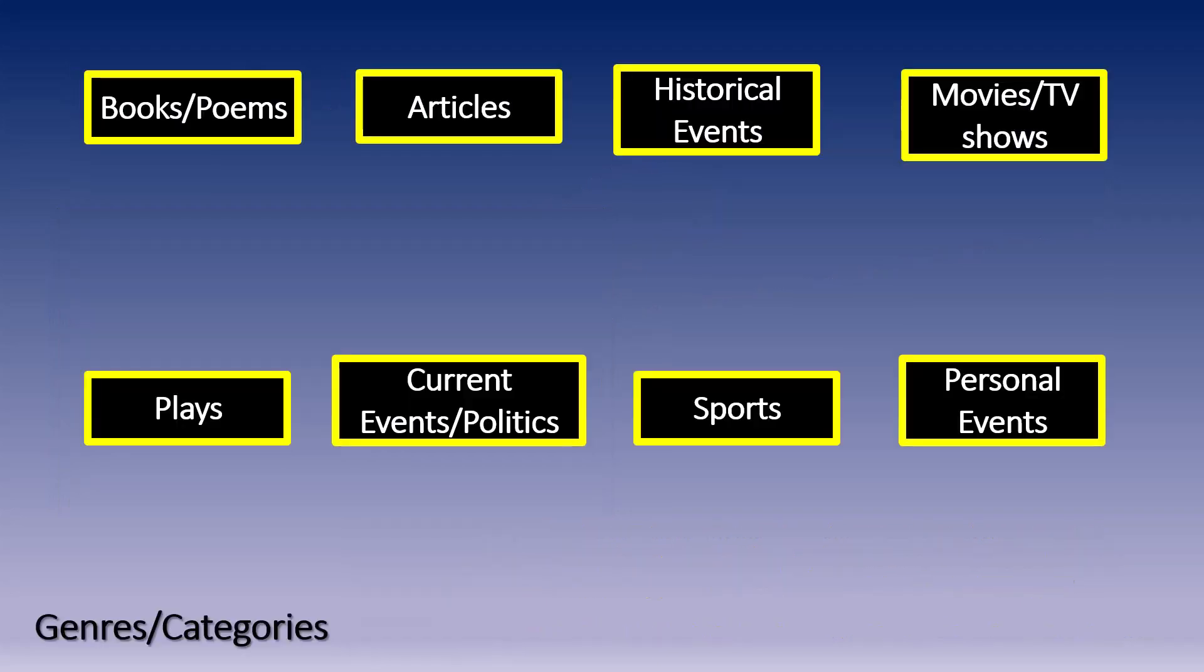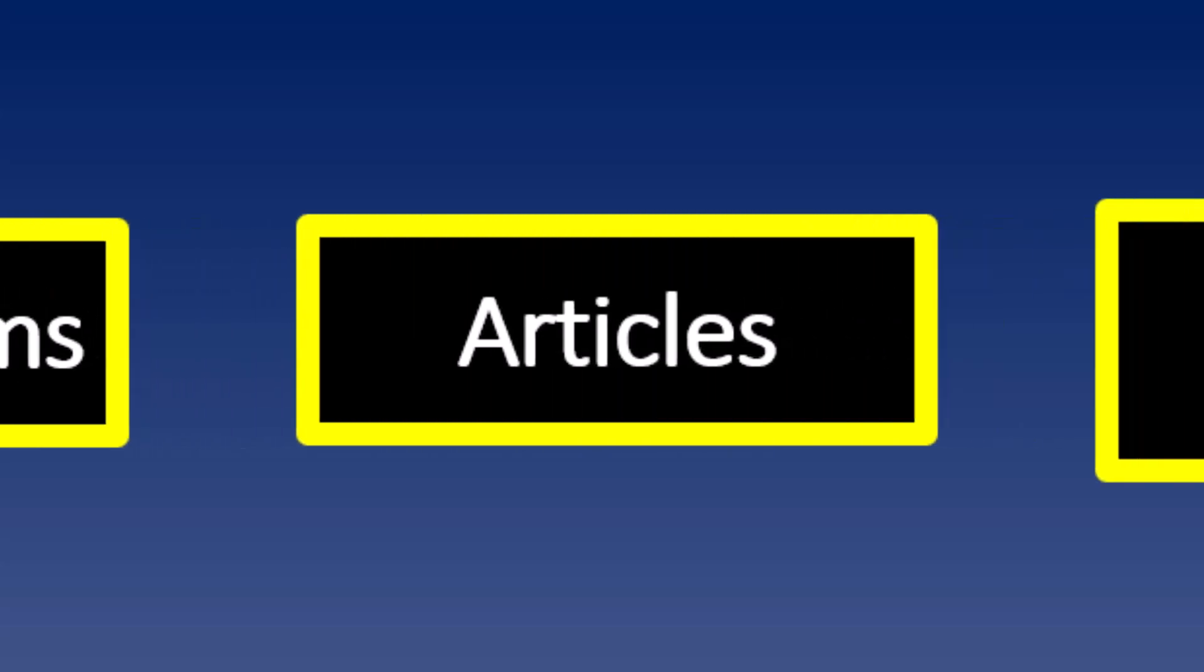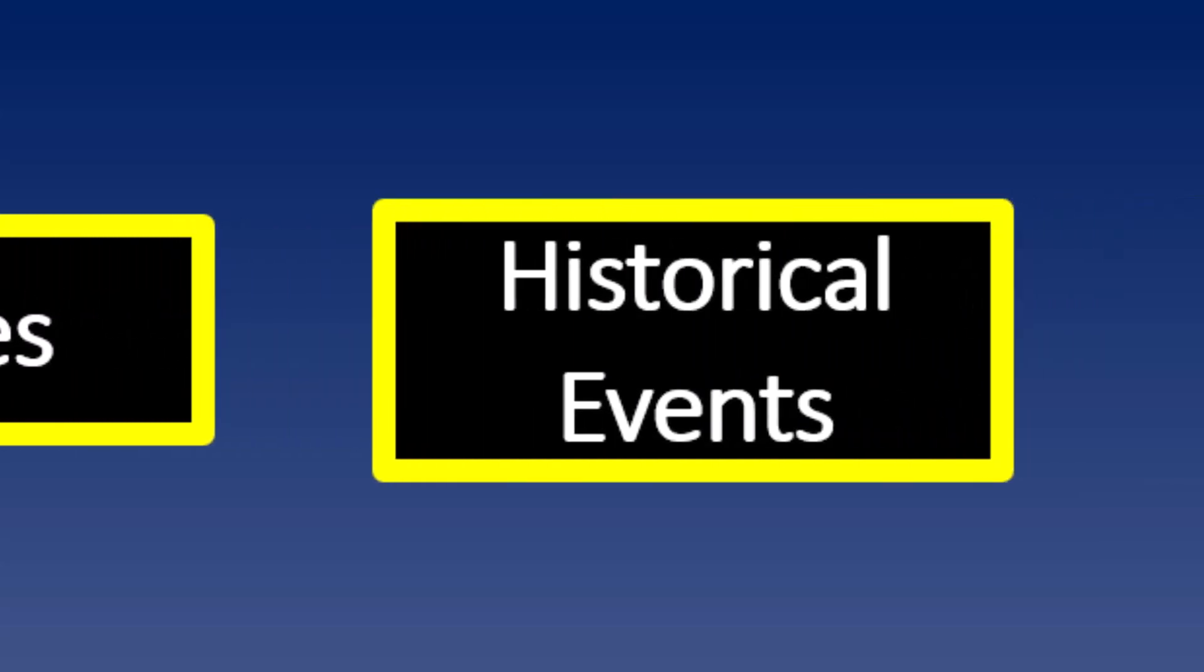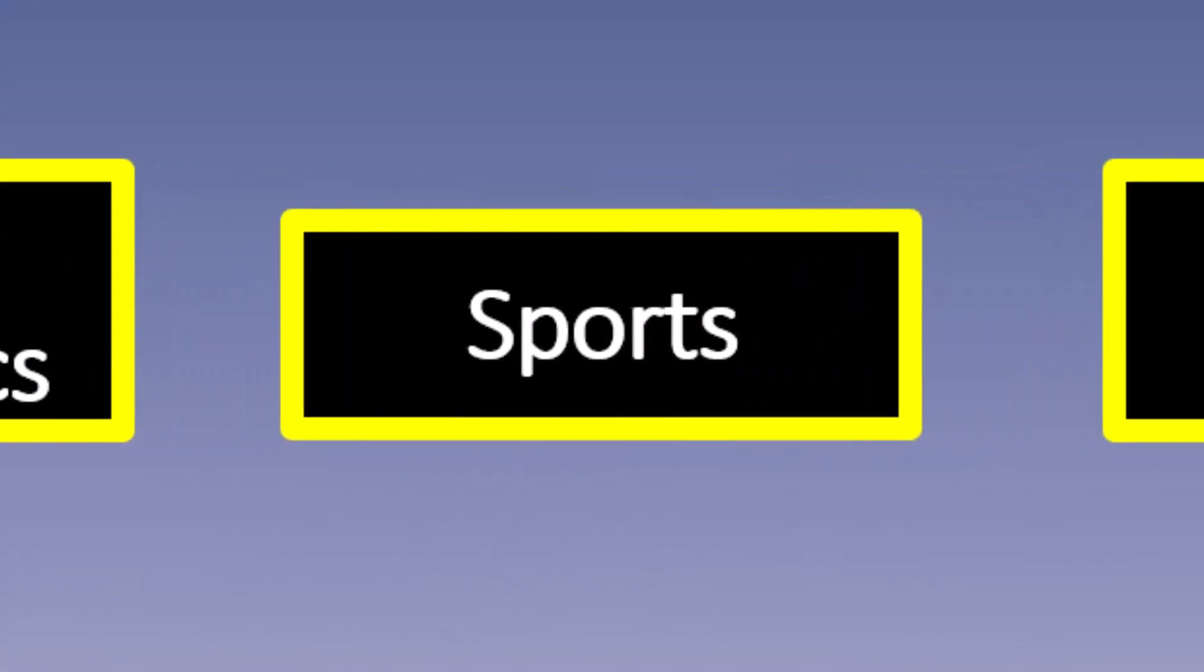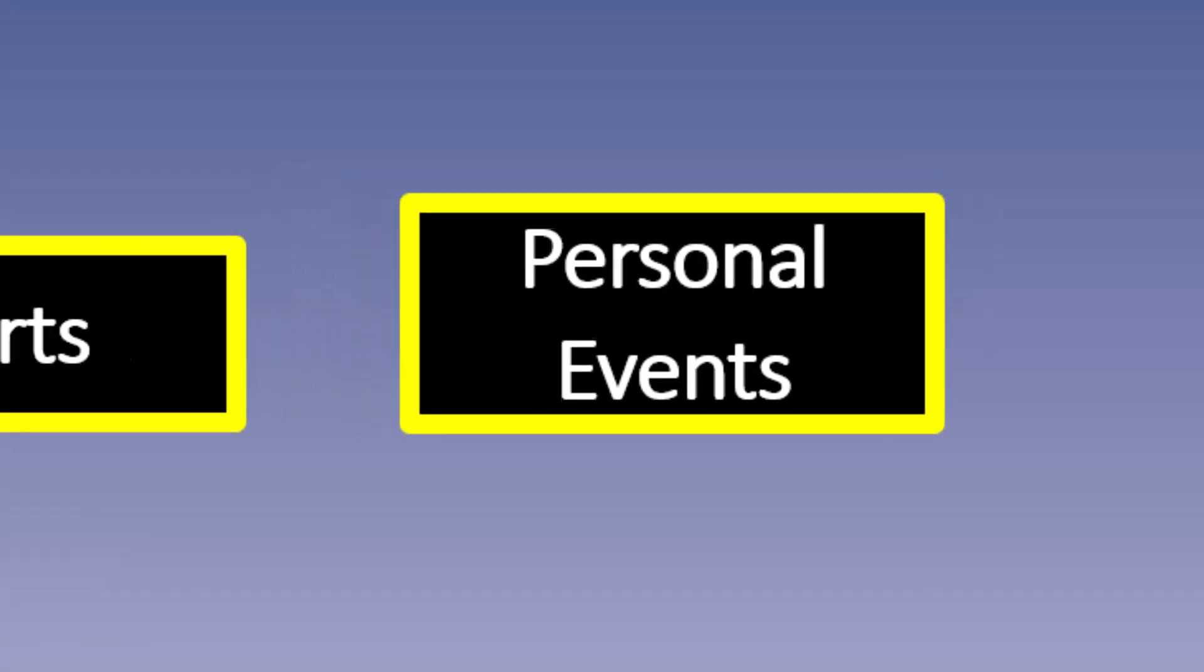Now you may ask, where do we get that evidence? Let's look at six different genres from which we can extract evidence or examples: books and poems, articles, historical events, movies and TV shows, plays, current events and politics, sports, and even personal events.